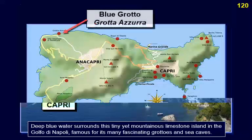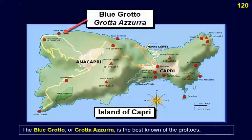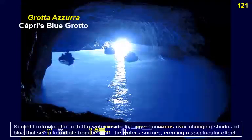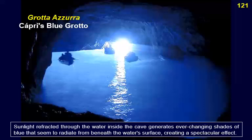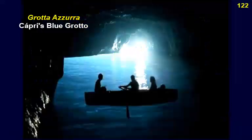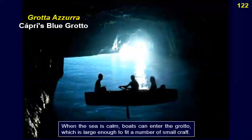The Blue Grotto, or Grotta Azzurra, is the best known of the grottoes. Sunlight refracted through the water inside the cave generates ever-changing shades of blue that seem to radiate from beneath the water's surface, creating a spectacular effect. When the sea is calm, boats can enter the grotto, which is large enough to fit a number of small craft.